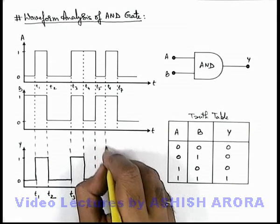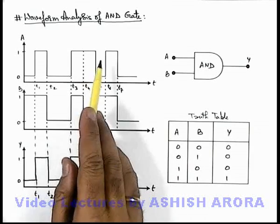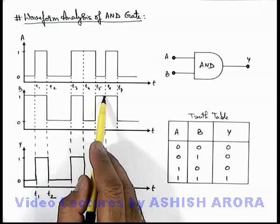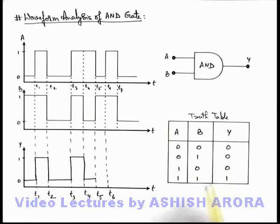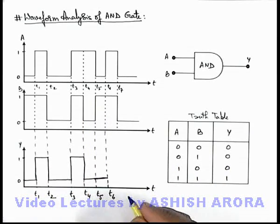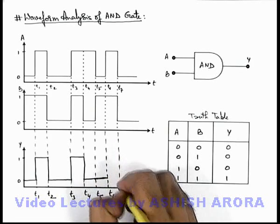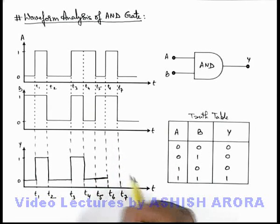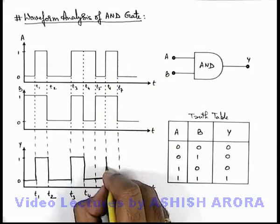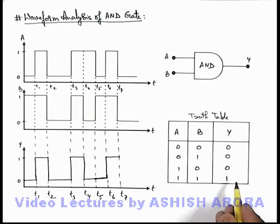And now from t5 to t6 instant, you can see that signal A is in zero state but B is in one state, so again for zero-one the output of the AND gate will continue to be in zero state. And from t6 to t7, here you can see both the signals at A and B are in one state, so this will also rise to one — if both are one, the output will be one.